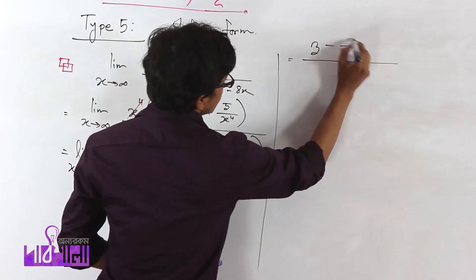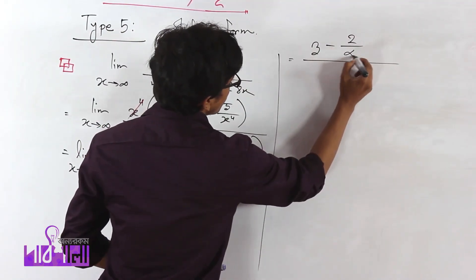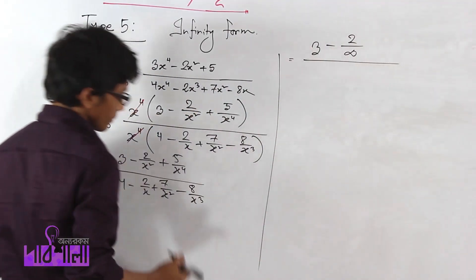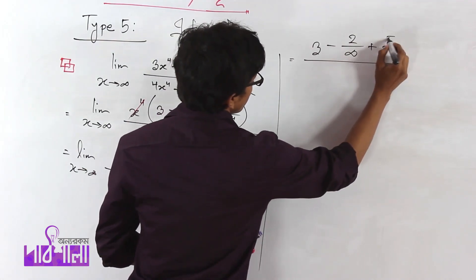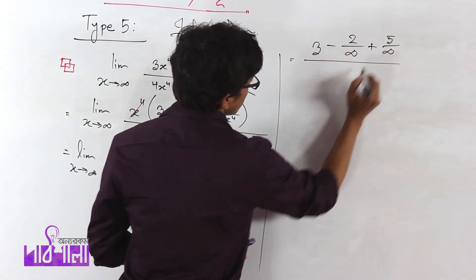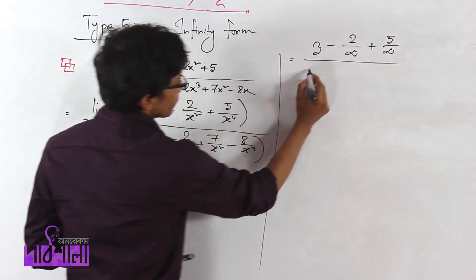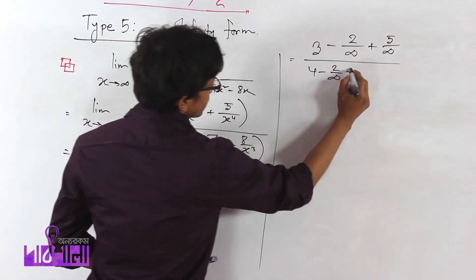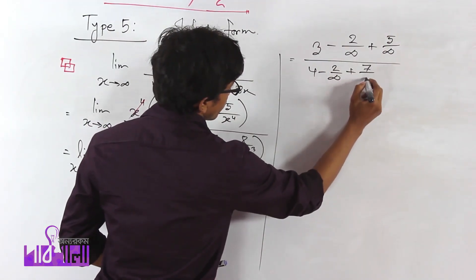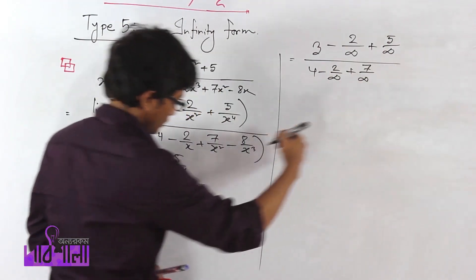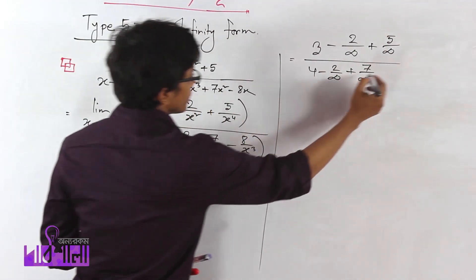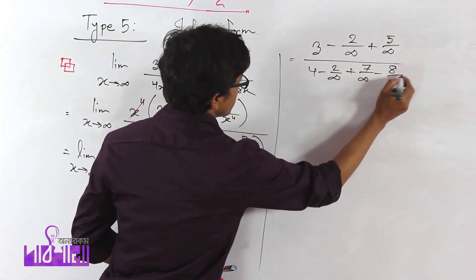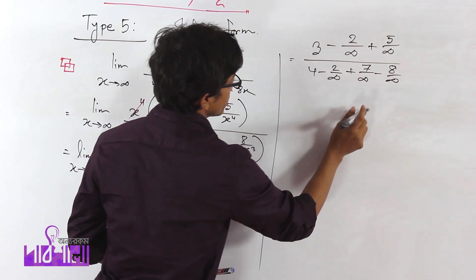We divide numerator and denominator by x to the power 4. Terms like 2 over x squared, 5 over x to the power 4, 4 minus 2 over x, 7 over x squared, and minus 8 over x cubed all appear.